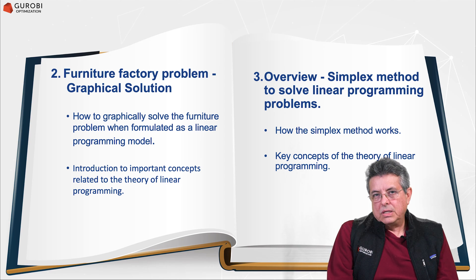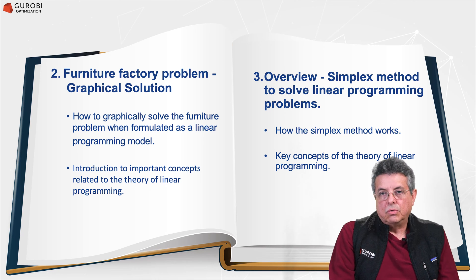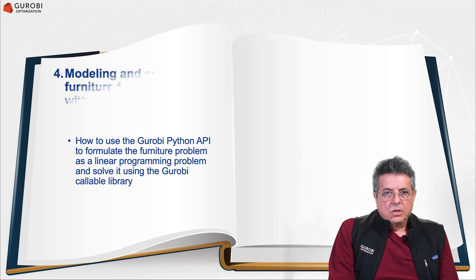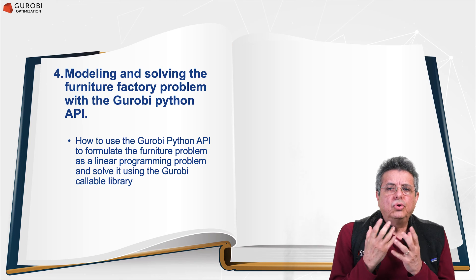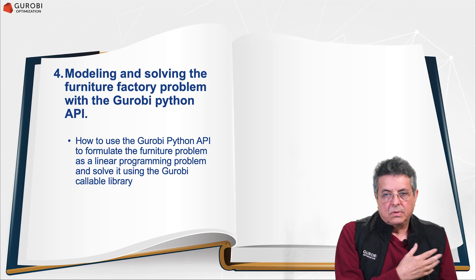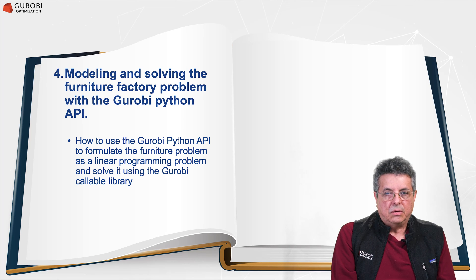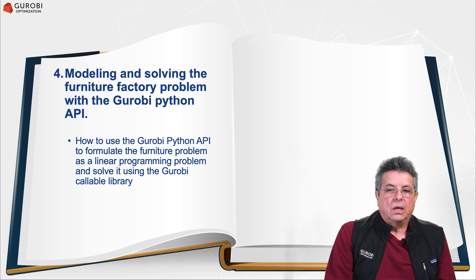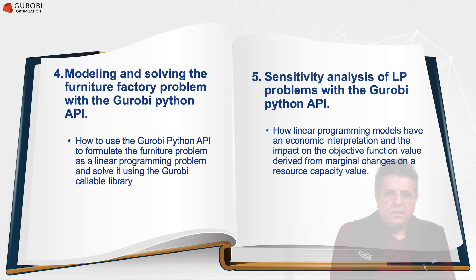Based on the simplex algorithm, you can solve extremely complex business problems in industry, military, and government. In section four, we describe how to use the Gurobi Python API to formulate the furniture problem. In section five, we describe how linear programming models have an economic interpretation — this analysis provides information about the impact on the objective function when you make changes in the capacity available in your problem.